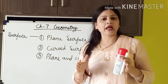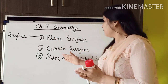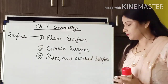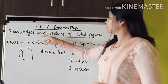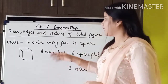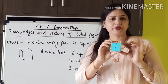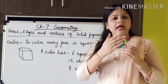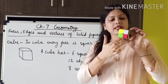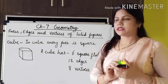All the solid shapes have either plane, curved, or plane and curved surfaces. Now we will learn about the faces, edges, and vertices of solid figures. Like here, I have drawn a cube shape. In the cube shape, every face is square — all the faces are square in shape.